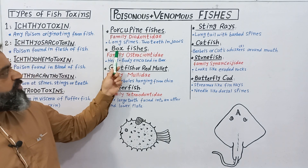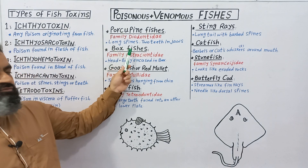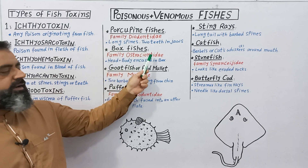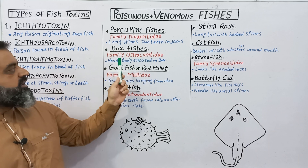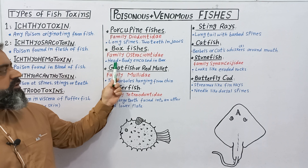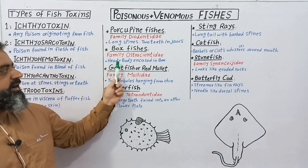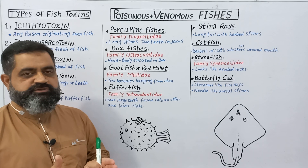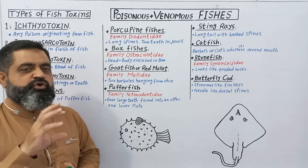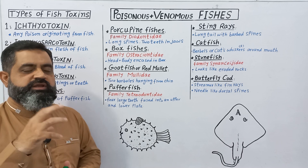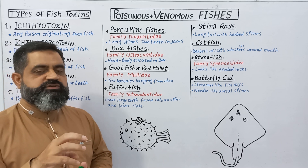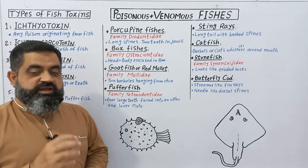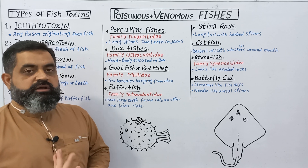The second type of poisonous fish is boxfish. Boxfish belong to family Ostraciidae. Their body contains a head and body encased in a box-like structure. Some people who don't know may eat this fish, but the meat of this fish contains poison and it can hurt their body.